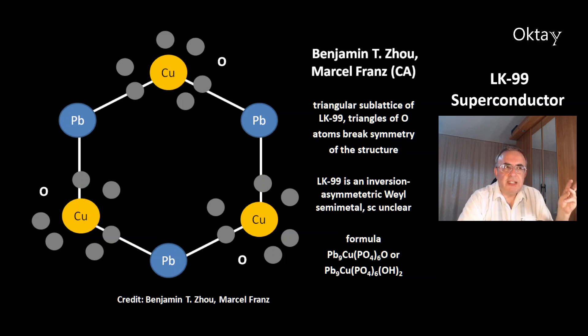According to them, LK-99 is an inversion asymmetric Weyl semimetal. Superconductivity is unclear. The formula is also unclear. It could be lead-copper-phosphate oxide or lead-copper-phosphate hydroxide.